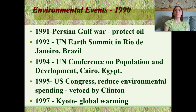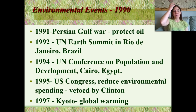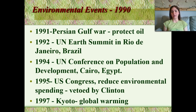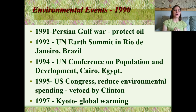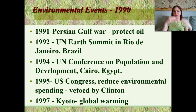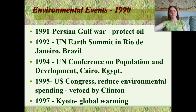In 1990, we had the Persian Gulf War to protect oil. In 1992, the United Nations Earth Summit in Rio de Janeiro, Brazil occurred. In 1994, the United Nations Conference on Population and Development in Cairo, Egypt. In 1995, the United States Congress called to reduce environmental spending, but that was vetoed by Clinton, who was trying to promote the importance of the environment. In 1997, the Kyoto Protocol was developed as a meeting of nations to address global warming — and the United States was not on board.